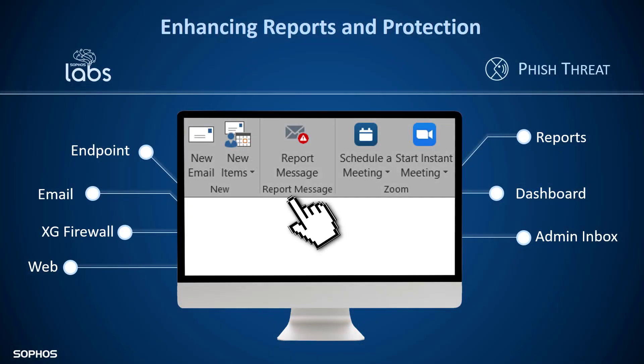Reports of all suspicious emails will be automatically forwarded to the designated Phish Threat inbox that you'll have set up within Sophos Central, for greater visibility into the threats that you face as an organization. Because this is Sophos, a copy will automatically be sent to SophosLabs global threat intelligence center for further threat analysis, helping Sophos in its work to predict and prevent threats for all customers.